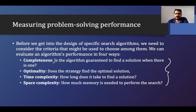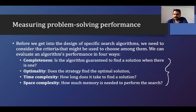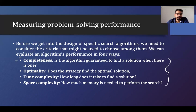The first one is completeness. It is: is the algorithm guaranteed to find a solution when there is one? Completeness means your algorithm should return the solution if the solution exists in the state space diagram. If it does, then it is called complete — meaning your algorithm has the performance metric of completeness.